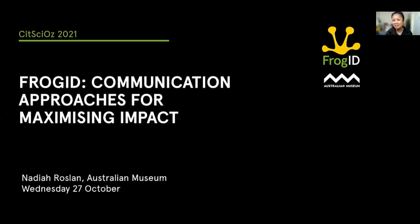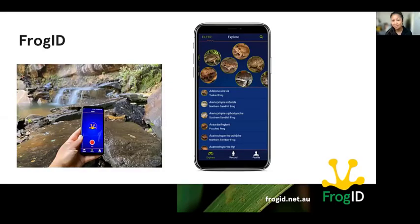Hi there. I'll be sharing the approaches that I think have helped the National Frog ID project achieve its national reach and engagement, with a particular focus on communications. The Frog ID project is all about Australia's frogs. It's a free app for smartphones that is a frog field guide and also a tool to record frog calls across the country.